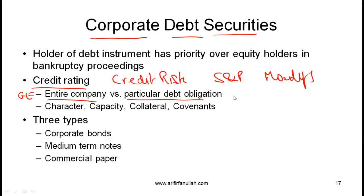Debt that is more senior or that needs to be paid off first will have a better rating than debt which is subordinate. You also need to understand at a high level what it is that these rating agencies look at when they assign credit ratings. This material is covered in detail in level 2 but at a high level you should understand the four C's of credit rating.